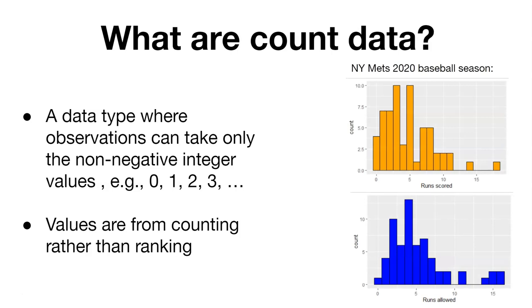What about an example of that? My favorite baseball team, the New York Mets, didn't have a great baseball season in 2020. A good example of baseball statistics that follow count distributions are the number of runs scored by a team and the number of runs allowed by a team.